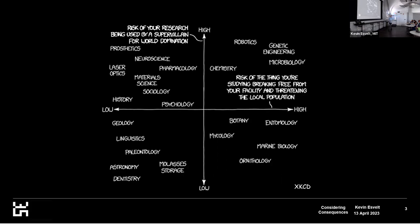The y-axis shows risk of your research being used by a super villain for world domination, against the risk of the thing you're studying breaking free from your facility and threatening the local population on the x-axis. You might wonder why molasses storage is here — that's the reference to the great molasses disaster in Boston a century or so ago. It can break free and threaten the local population. The reason this strikes home to me is the mention of gene drive.